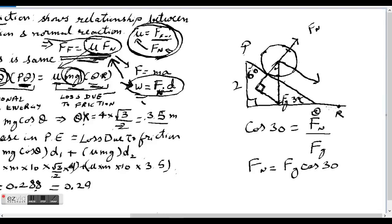So this point is P, this point is Q and this point is R. The ball rolls from P to Q and then rests at R.